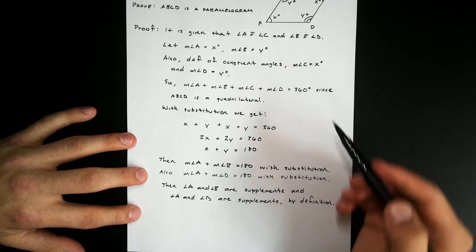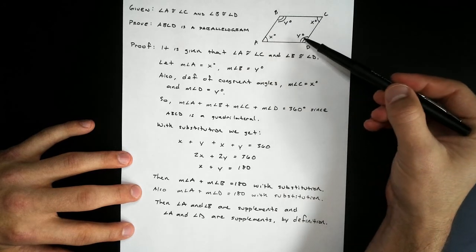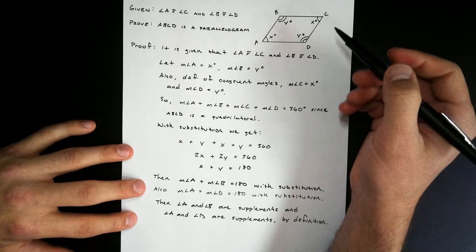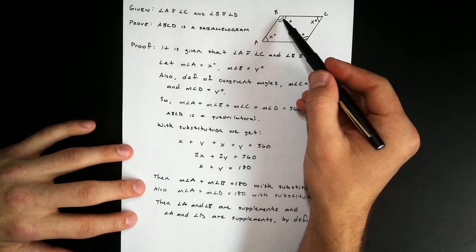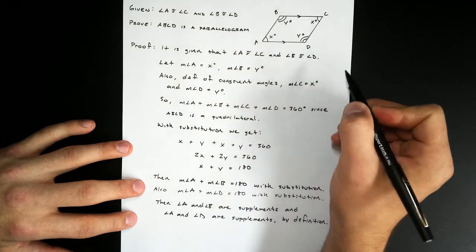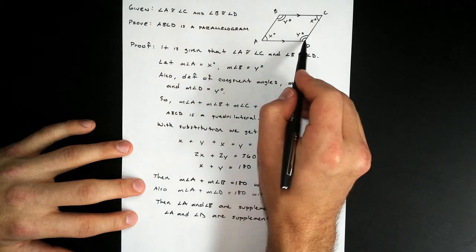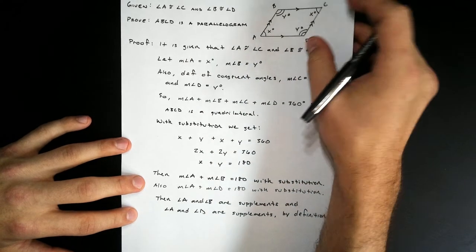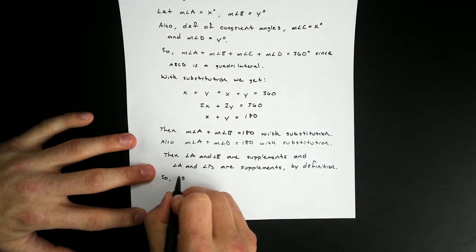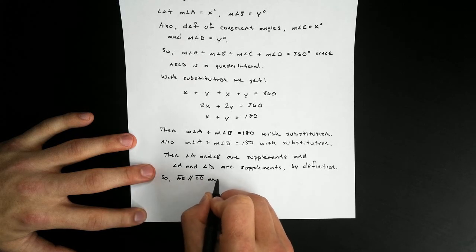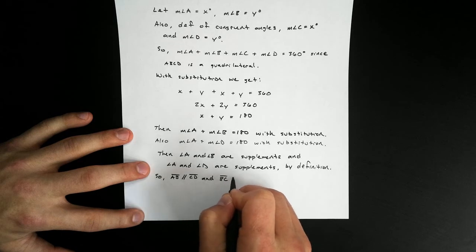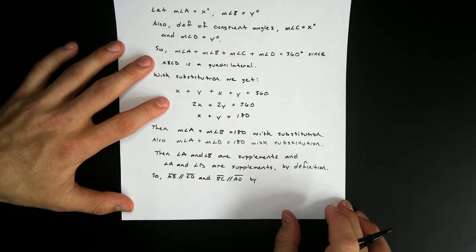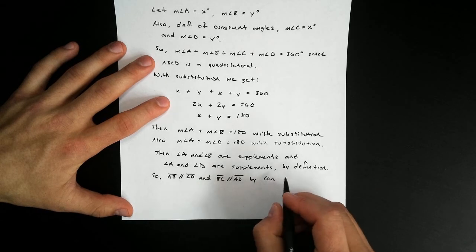Alright, so we're almost there. Because I know that these consecutive angles are supplements to each other, I know that the lines containing those angles are parallel to each other. So if A and B are supplementary, that means BC and AD have to be parallel. And the same thing goes for A and D — if these two angles are supplements, then AB and CD have to be parallel. So we have AB parallel to CD, and also BC parallel to AD. Our reasoning here is one of our parallel line theorems — this is the consecutive interior angle theorem converse.